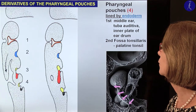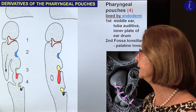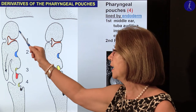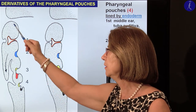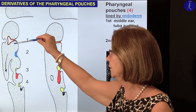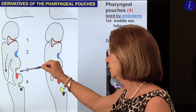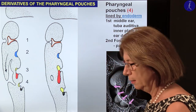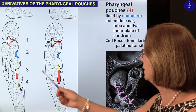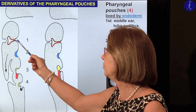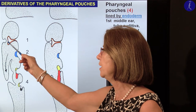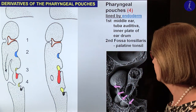Now we discuss the derivatives of the pharyngeal pouches. The pouches are lined with endoderm, except for the inner surface of the first. We have four pouches: one, two, three, four — with the third and fourth having a ventral and a dorsal wing. From the first pouch, the middle ear and the auditory tube will develop, and because the middle ear develops from here, also the inner plate of the eardrum will develop from this first pharyngeal pouch. You have already seen this in the dissecting room — the pharyngeal opening of the auditory tube in the nasopharynx.